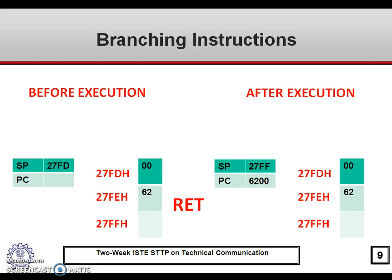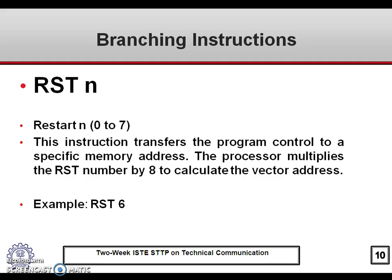This is the effect of the RET instruction — since the program counter is now 6200H, execution begins from that memory location. The RST N (restart) instruction, where N is 0 to 7, transfers program control to a specific memory address known as the vector address. The processor multiplies the RST number by 8 to calculate the vector address.